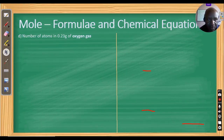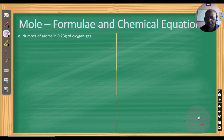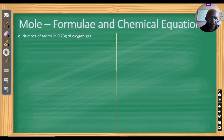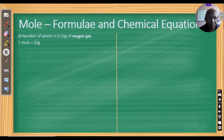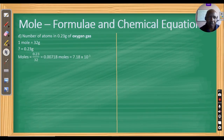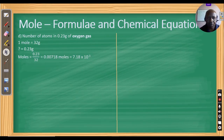Another example: find the number of atoms in 0.23 grams of oxygen gas. When asked about atoms or molecules, you apply Avogadro's constant. One mole of oxygen gas is 32 grams. So the number of moles is 0.23 ÷ 32 = 0.00718 moles, which in standard form is 7.18 × 10⁻³.